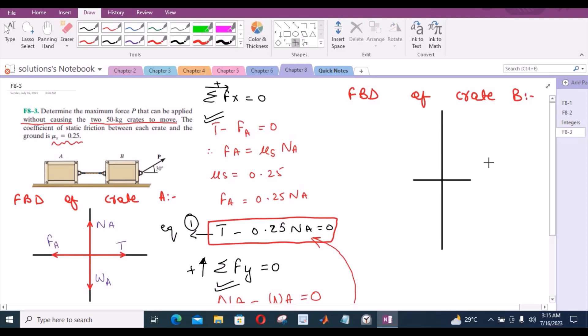The free body diagram of crate B looks something like this. I have a vertical force acting downwards, I have a normal reaction acting upwards, I have a force P acting 30 degrees from the horizontal, I have a frictional force acting backwards towards left, and I also have one more force, that is the tensile force, also acting towards left. Let's label all of them. This is NB, this is force P making 30 degrees with the horizontal, this right here is weight B, this is frictional force at B, and this right here is tensile force.